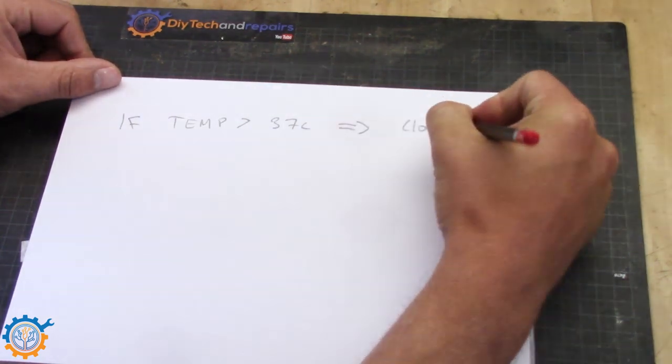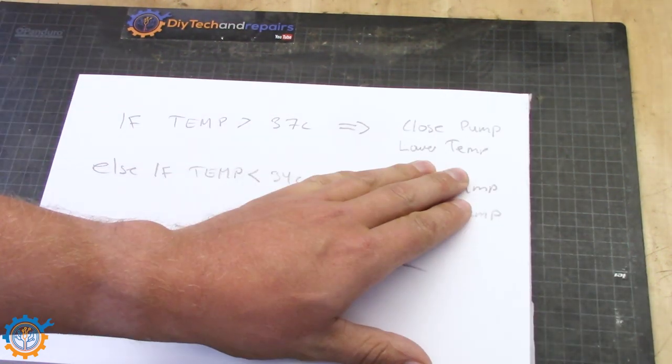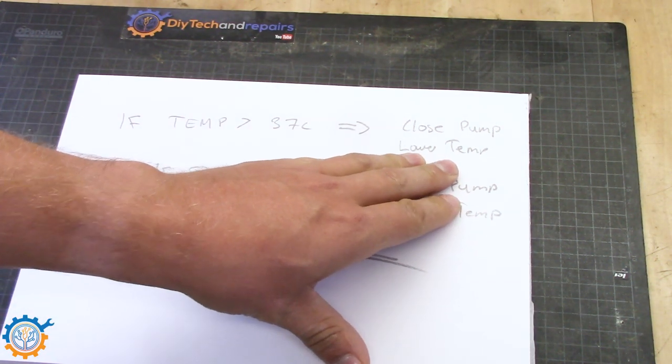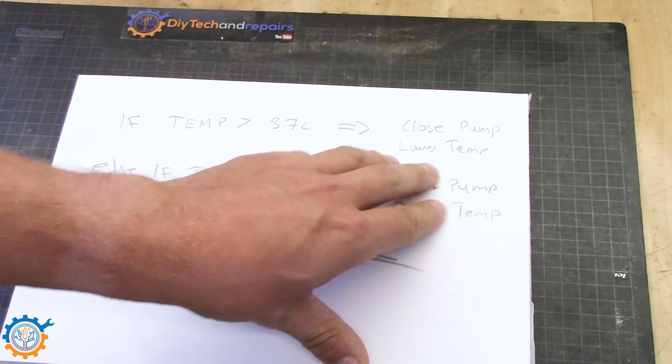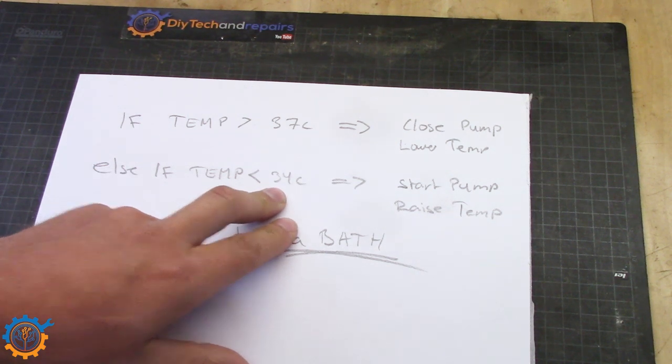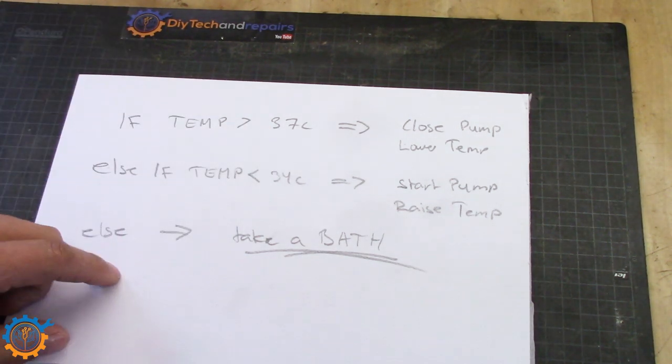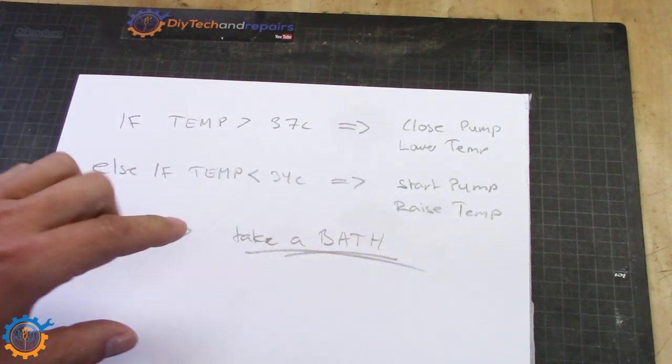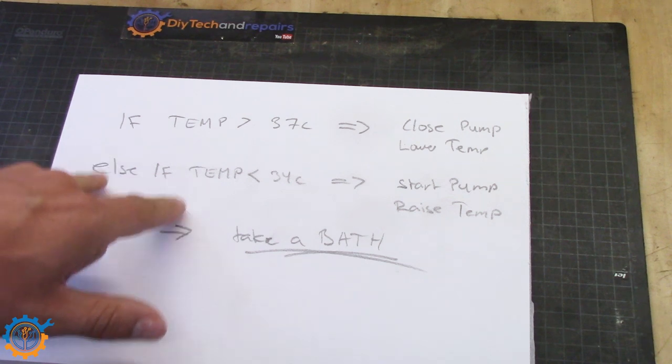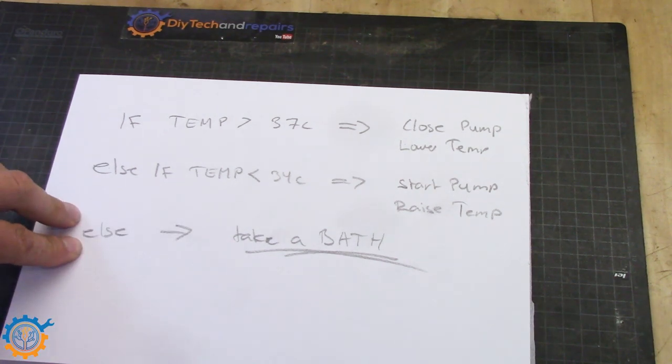Basically what I want to do is if we have temperature above 37°C we will close or shut off the pump and lower the temperature. If the temperature is lower than 34°C I will start the pump and raise the temperature again. I have a hysteresis in between because it takes time until the temperature starts falling or rising again. If they are too close to each other it won't work that great.